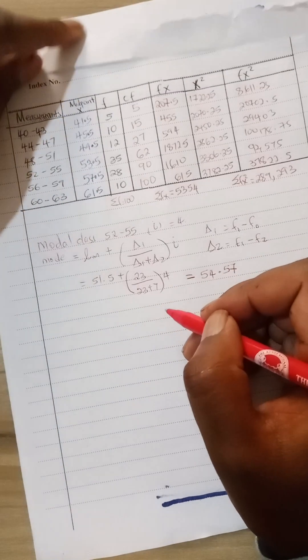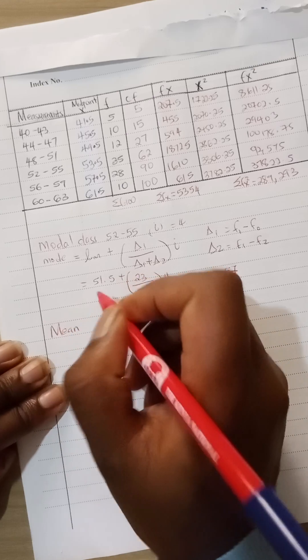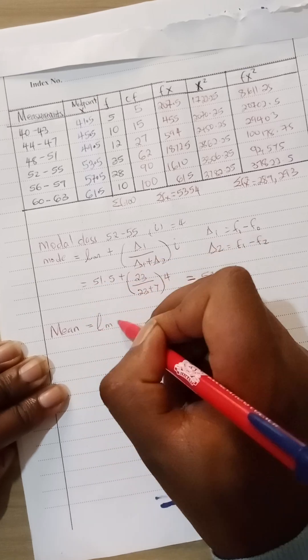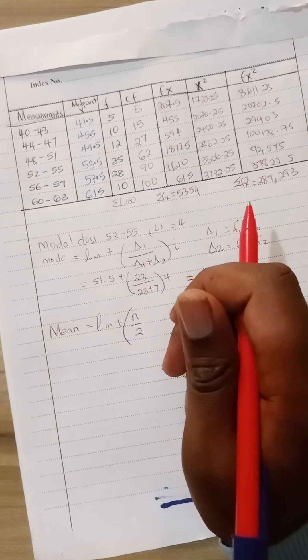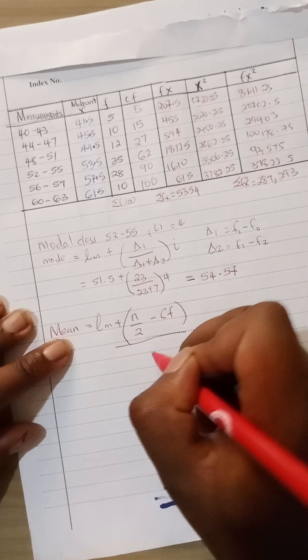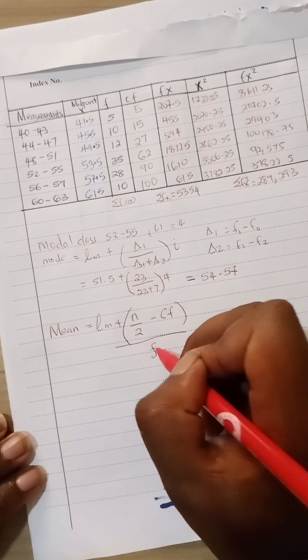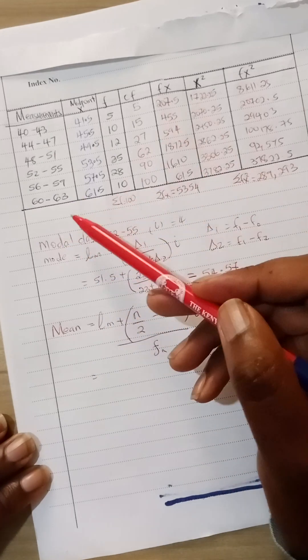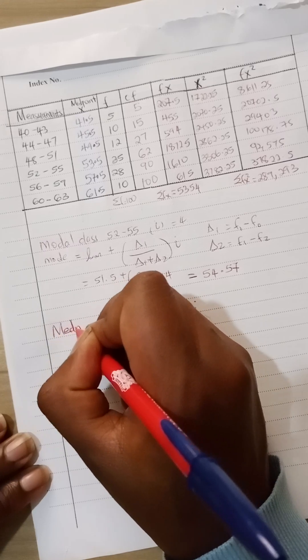The next thing you are going to look at is the mean. Sorry, this is the median. The median is given by this formula: the lower class limit plus the sample size n divided by 2 minus the cumulative frequency, divided by the frequency in that class, multiplied by the class width.